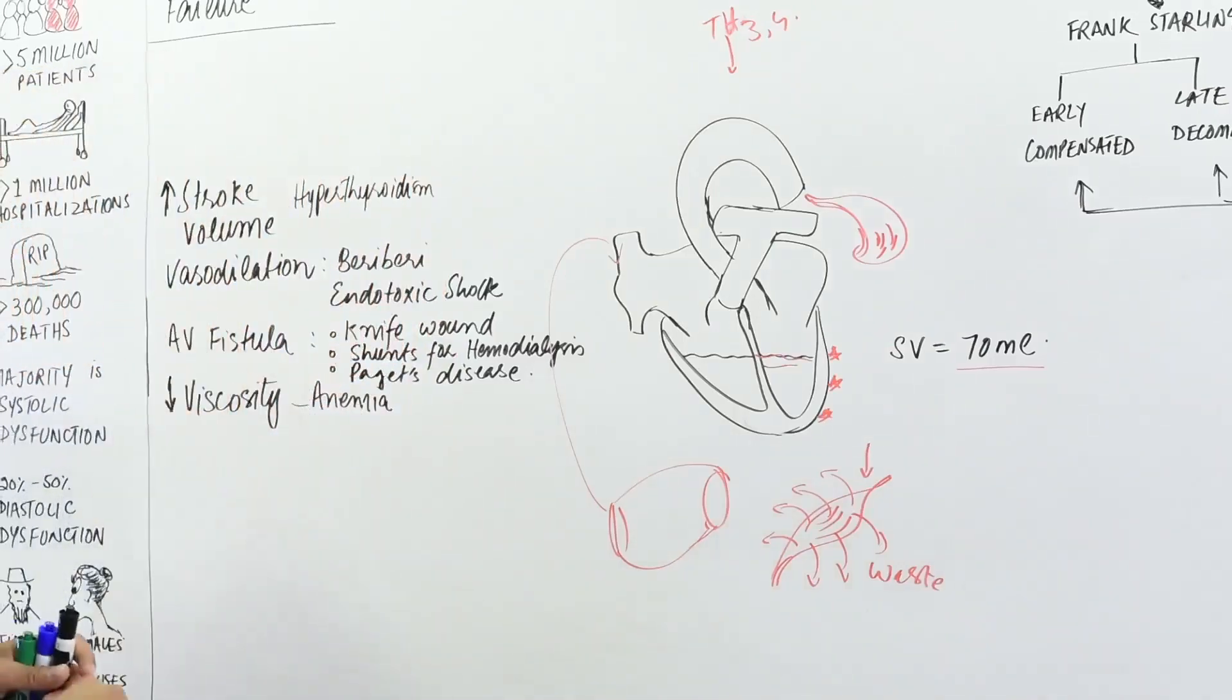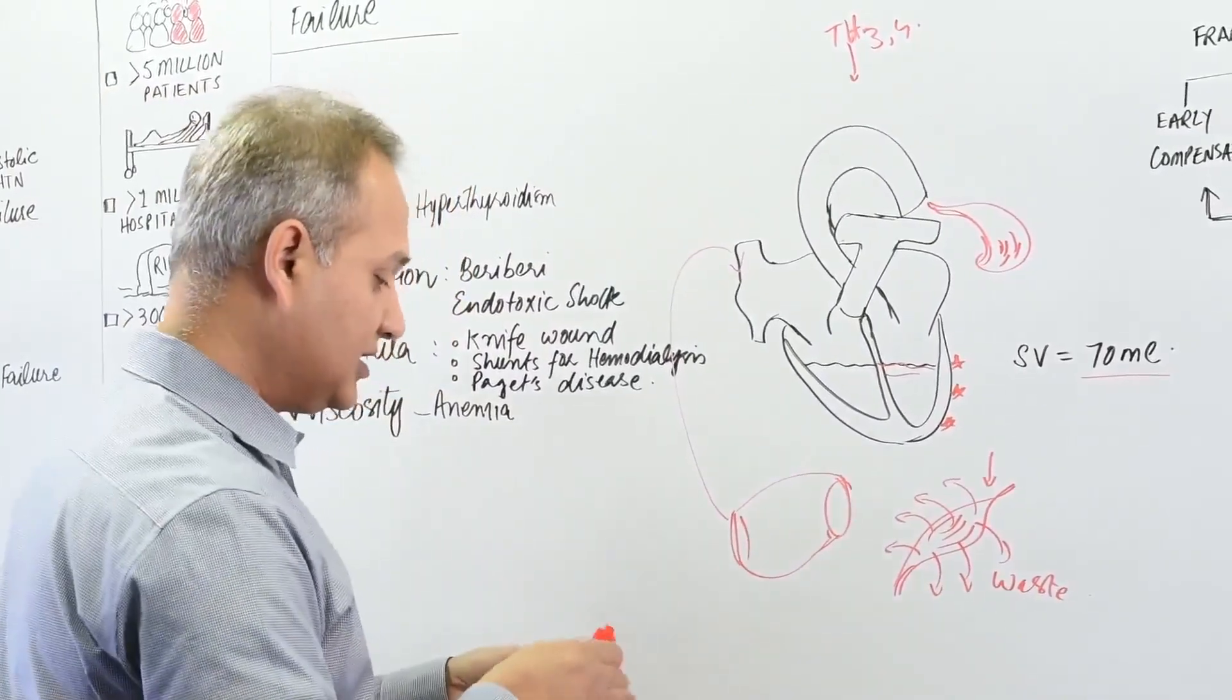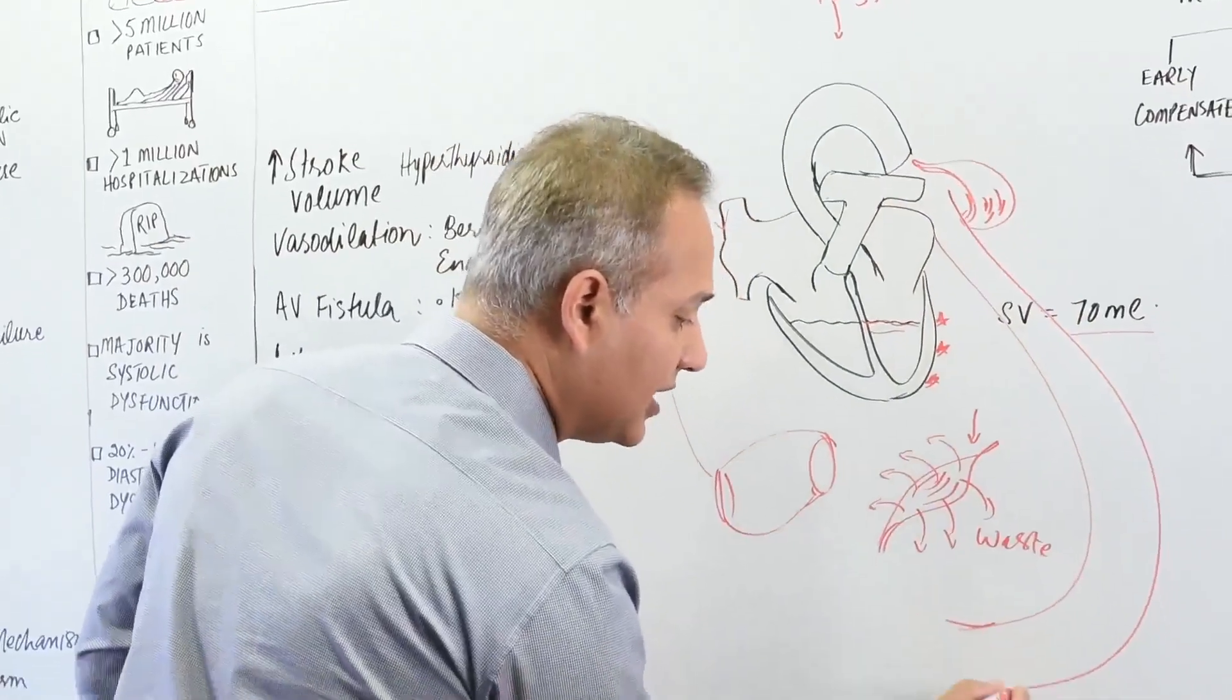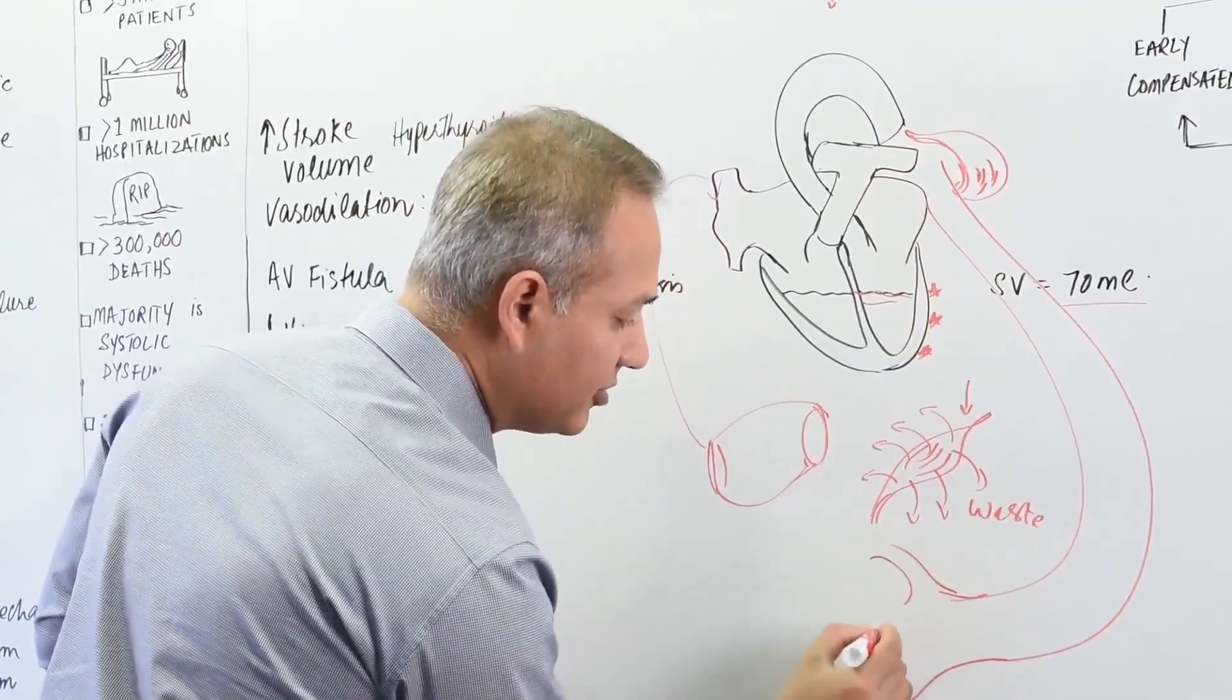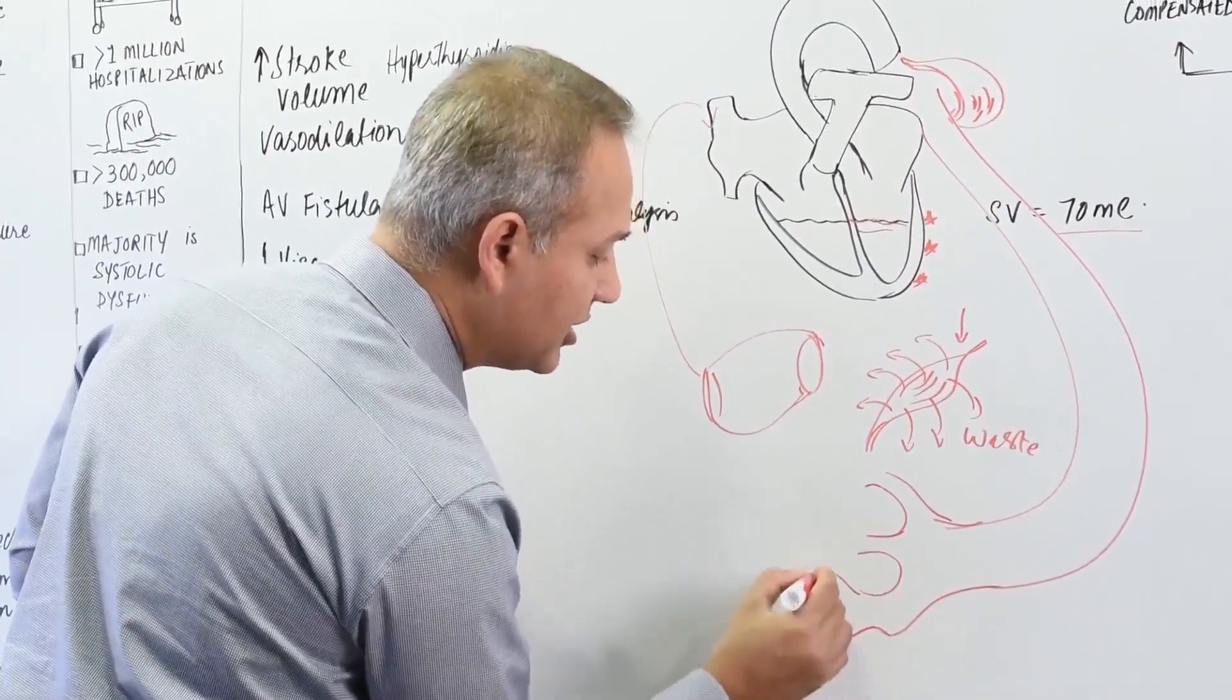How about vasodilation? This is the blood vessel. Look, vasodilation. We have the arterial side, so this is the arterial side, and then we have smaller branches, then finally we have capillaries.